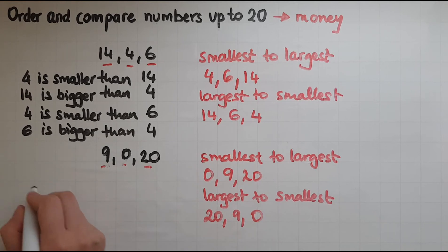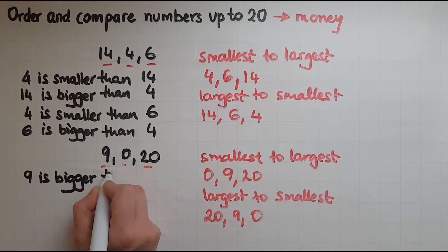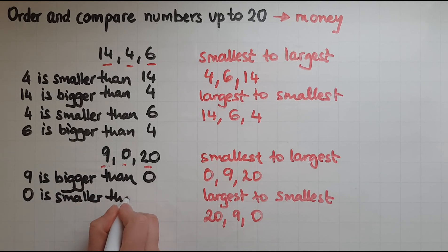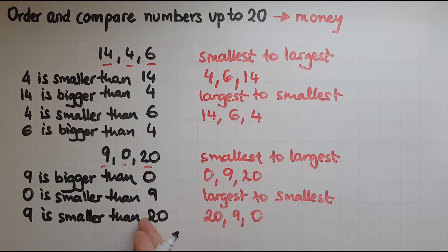Now I'll compare some of these numbers: 9, 0, and 20. So 9 and 0, 9 is bigger than 0, because it was bigger than 0. 0 is smaller than 9. Or if I compare 9 and 20, 9 is smaller than 20, and 20 is bigger than 9.